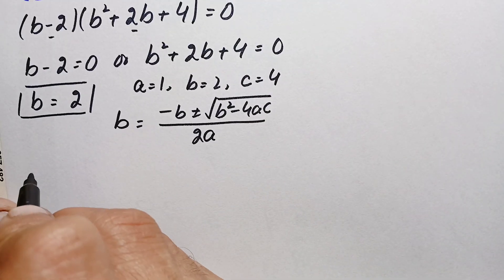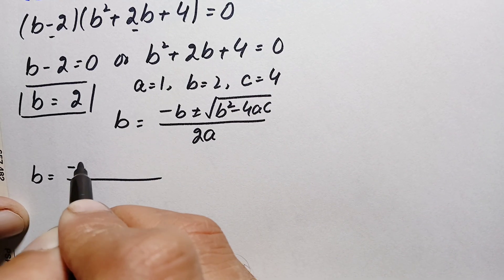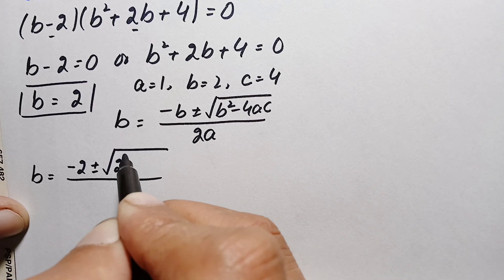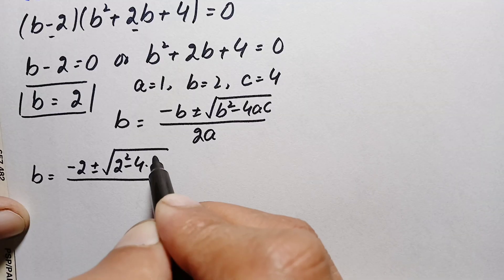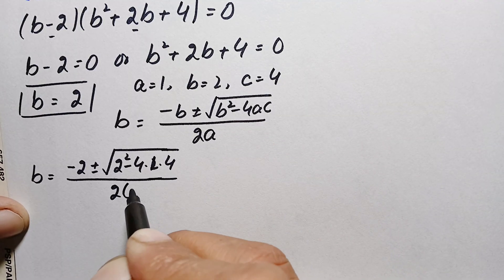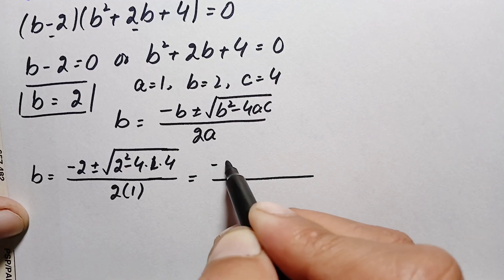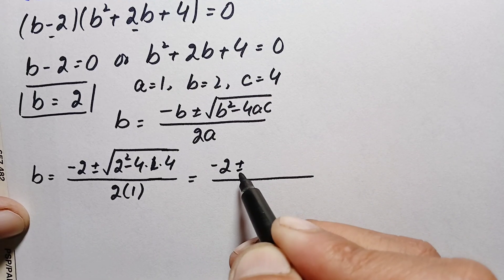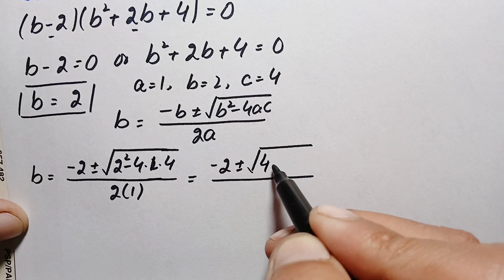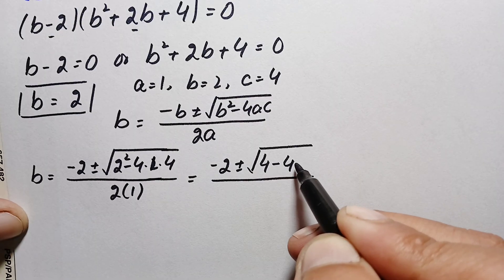Substituting the values, b equals minus 2 plus or minus the square root of (2 squared minus 4 times 1 times 4), divided by 2 times 1. Simplifying: 2 squared is 4, and 4 times 1 times 4 is 16, so we get the square root of (4 minus 16), divided by 2.